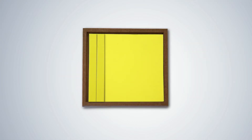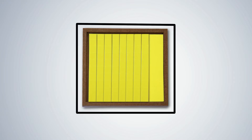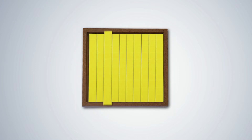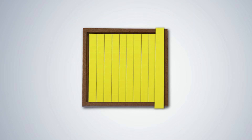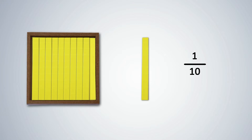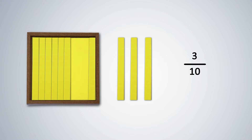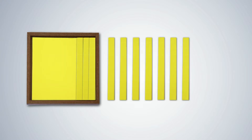Introduce the decimal set from the math kit. The large yellow square from the tray is one whole. This square, when divided into 10 equal parts, gives 10 equal strips. 1 part out of 10 parts is 1 tenth of the whole, written as 1 upon 10. 3 parts out of 10 is 3 tenths of the whole, or 3 upon 10. 7 parts out of 10 is 7 tenths.